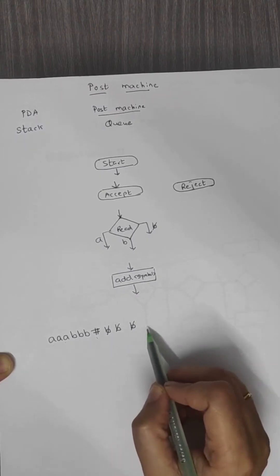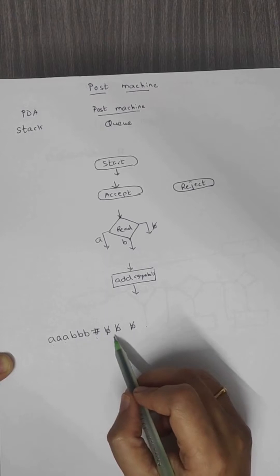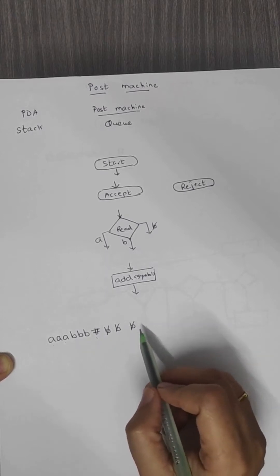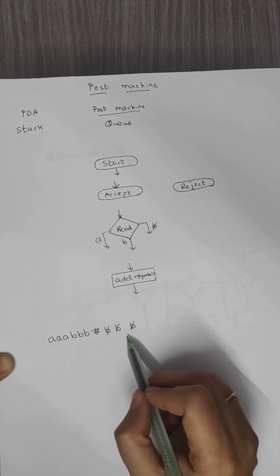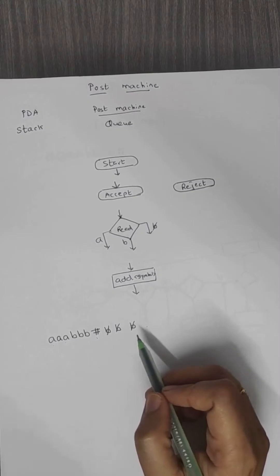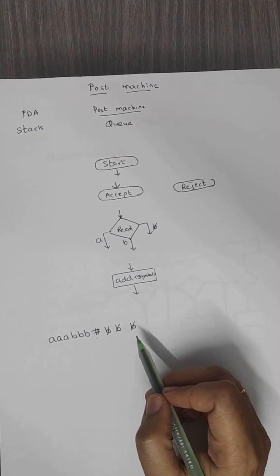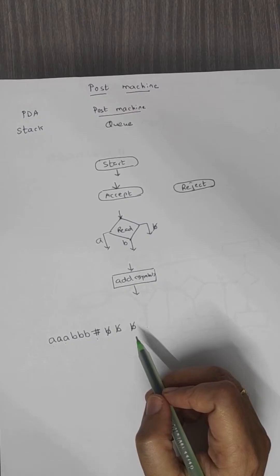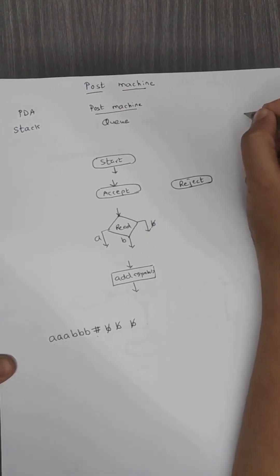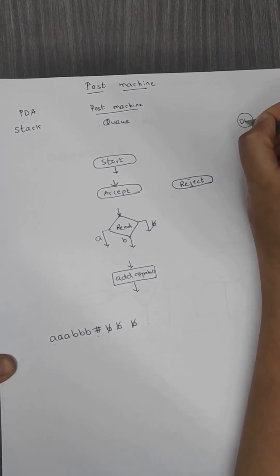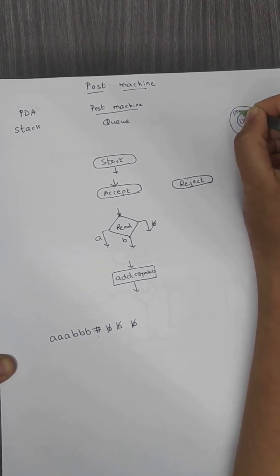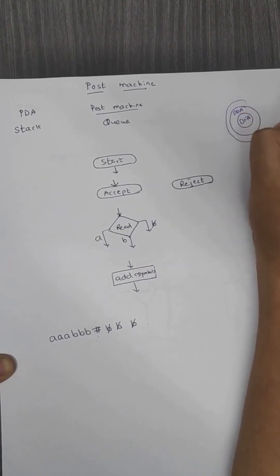Just understand that instead of using a stack, we will be using the queue. The capability of the Post Machine is the same as that of the Turing Machine, and the powers of Post Machine are more than the PDA and finite automata. So we can say that DFA is a subset, PDA is a superset of it, and Post Machine is a superset of PDA.